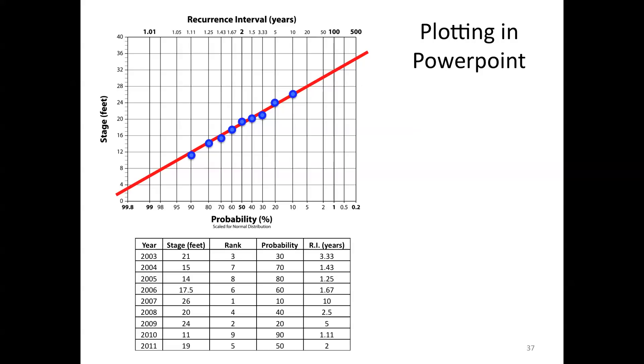And so that's the case. Here we have 1%. We come up till we hit the trend line. Where we hit the trend line then, we're going to turn and go to the left to get the stage. And so in this case, the 100-year recurrence interval flood has a stage of 32 feet.